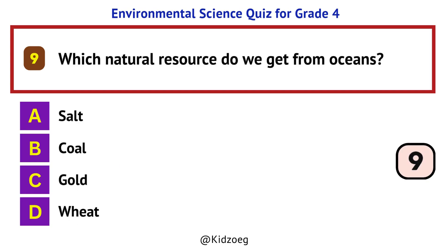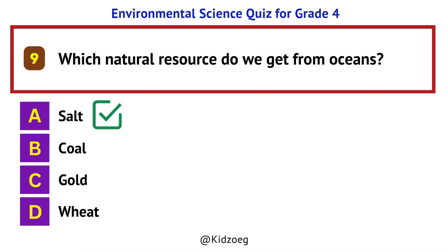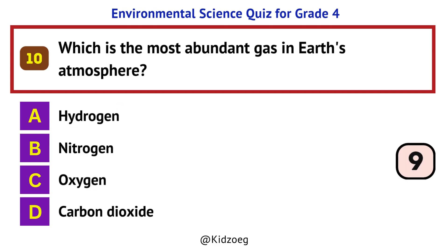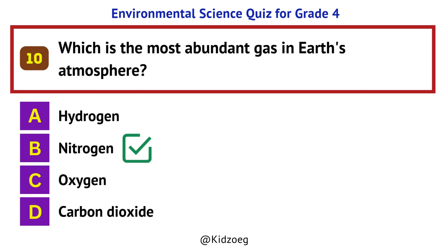Which natural resource do we get from oceans? Salt. Which is the most abundant gas in Earth's atmosphere? Nitrogen.